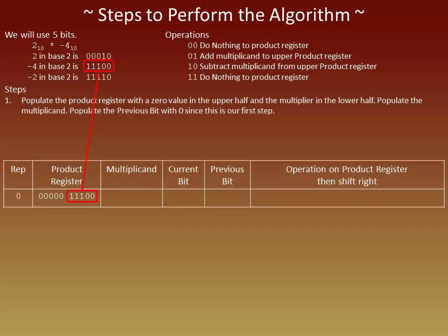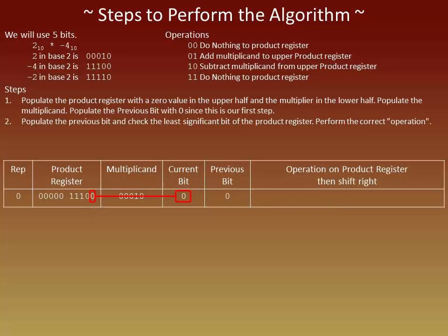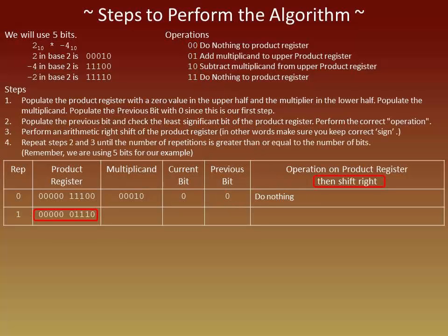Now we will cover the steps for the algorithm. First, populate the product register with 0 in the upper half and place the value of the multiplier in the lower half. The multiplicand needs to be populated with the correct value, and it remains the same throughout all the repetitions. The previous bit needs to be set to 0 since there was no previous bit to refer to. For step 2, look at the least significant bit of the product register and place its value in the current bit. Now look at the current bit and the previous bit together — here it is 0,0, which means we do nothing to the product register. We still need to right-shift the product register for step 3. We repeat steps 2 and 3 until the number of iterations is greater than or equal to the number of bits being used — in our case 5.